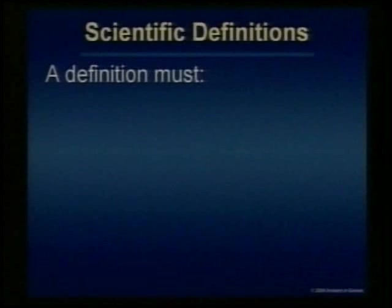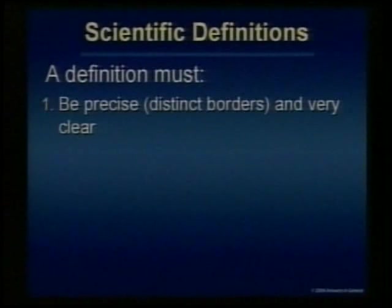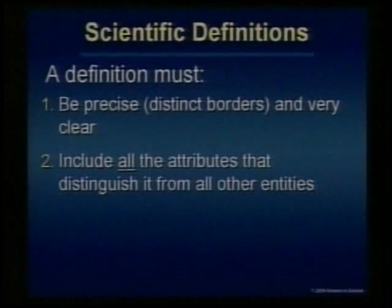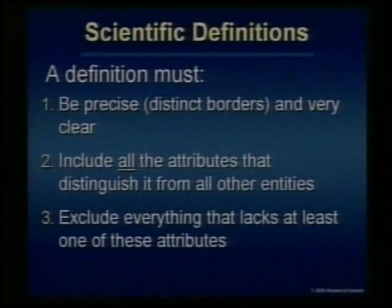What makes a good scientific definition? I read through a lot of textbooks and very few of the definitions are valid definitions. They've made them so fuzzy that our students don't even know what they're learning anymore. So we've got to get back to the basics. A definition needs to be precise — it has to have distinct borders, very clear. Include all the attributes that distinguish it from other entities and exclude everything that lacks at least one of those attributes. That is the definition of a definition in science. Clear and precise — state exactly what is included and what is not included.